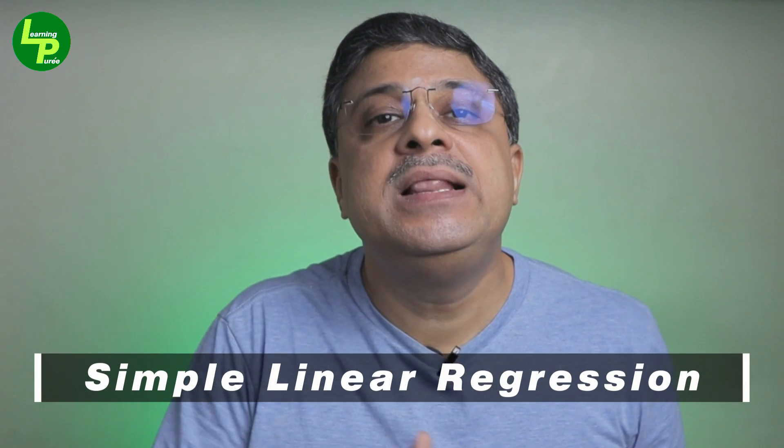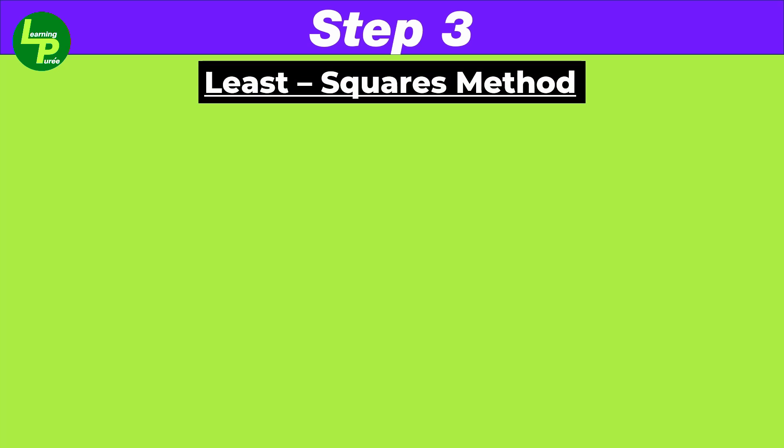As mentioned earlier in the video, since the process is employed using a single predictor variable, we also refer to it as simple linear regression. In step 3, to conduct linear regression, we use the least squares method.